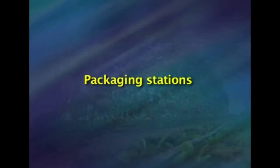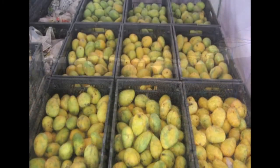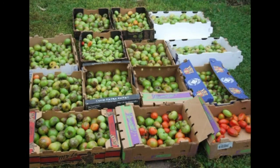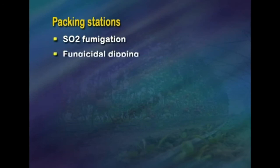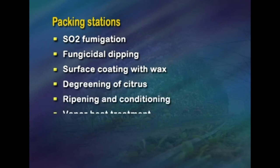Packaging stations: there is an absolute lack of the concept of packaging house establishments in India. Fruits and vegetables are generally packed in the field without any pre-treatment; some are even transported without any packaging. A number of important operations are carried out at packing stations, including sulfur dioxide fumigation, fungicidal dipping, surface coating with wax, degreening of citrus, ripening and conditioning, and vapor heat treatment.